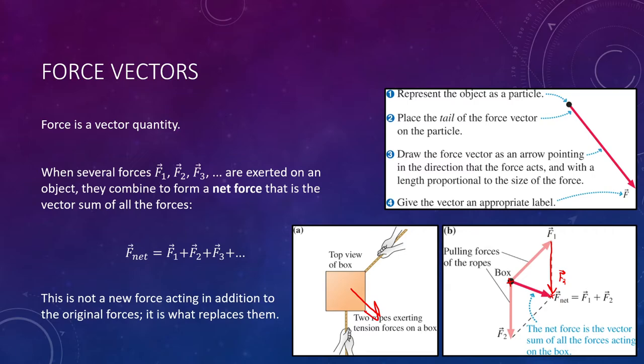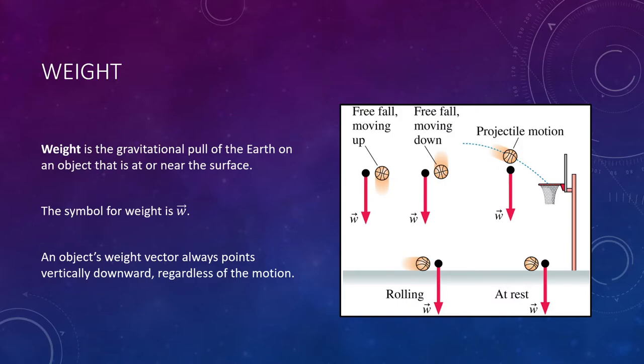Again, this is something we'll get to again later, especially with math involved. But let's keep with the theme of keeping things a little bit simple in this lecture. Our goal now, just to finish out this lecture, is to simply go through each type of force that we might encounter in this course. So this is like a catalog of forces. Here on Earth, every single object has a force known as the weight of the object. Weight is the gravitational pull of the Earth on any object that is at or near the surface of the planet. The symbol for weight is lowercase w.